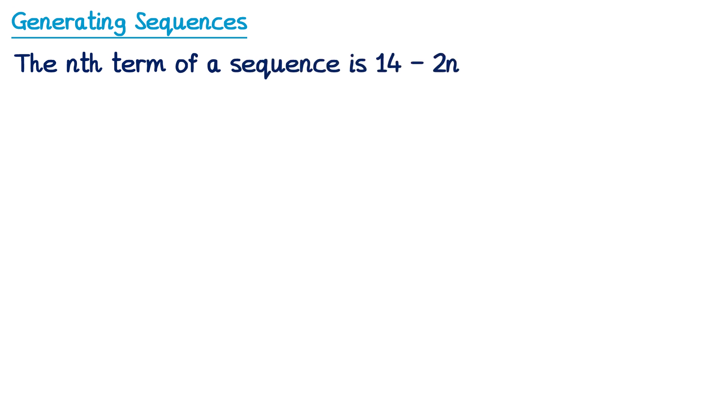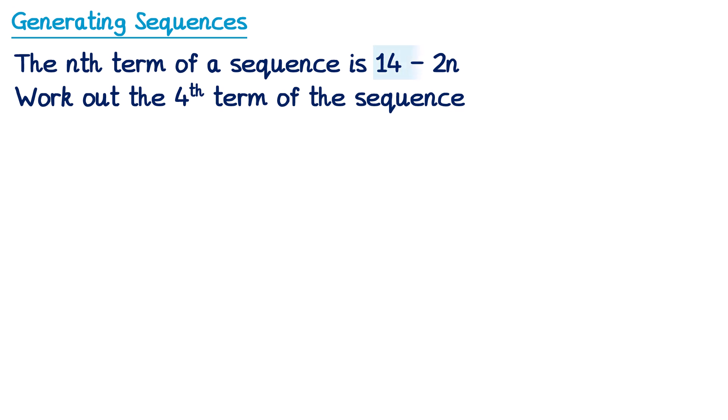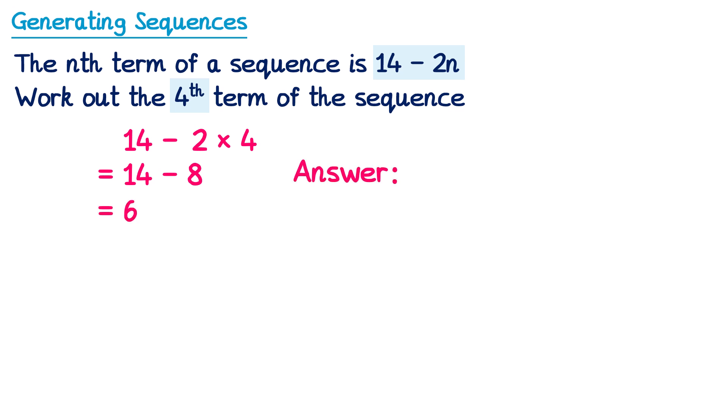In this question we're told the nth term is 14 minus 2n. We need to work out the fourth term of the sequence. So we've got 14 minus 2n and we're going to substitute 4 for the fourth term. We still use the same process but we need to be careful with our working out. We've got 14 subtract 2n, which means 2 lots of n — in our case, 2 lots of 4. The order of operations says we do multiply before subtract, so we need to do 2 times 4 first. 2 times 4 is 8, so this is 14 subtract 8. And 14 subtract 8 is 6, so the answer to the question is 6.